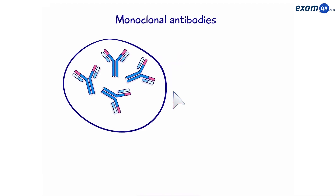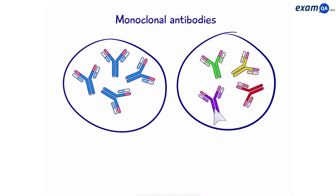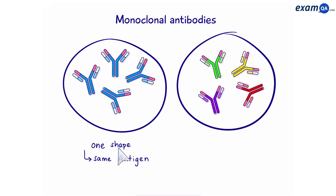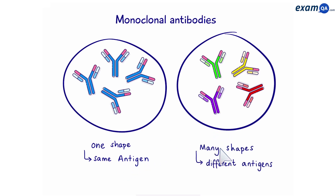Monoclonal Antibodies. Here we have a group of antibodies, and here's another one. The differences between these two groups is that the group on the left all have one unique shape and will therefore all bind to the same antigen. The group on the right have different shapes, so we have different types of antibodies and therefore they will bind to different antigens. A group of antibodies that all have the same shape and will bind to the same antigen are known as monoclonal antibodies.